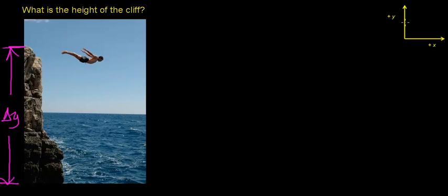This is going to be our coordinate system here, where the up direction is going to be the positive y direction. The easiest way to measure this height without a measuring stick is to take something that's relatively heavy and small. You want to use a small object because it will reduce the amount of air resistance on that object, and you want to use something heavy because that increases the object's inertia, which decreases the tendency of the air to slow it down as it's falling.